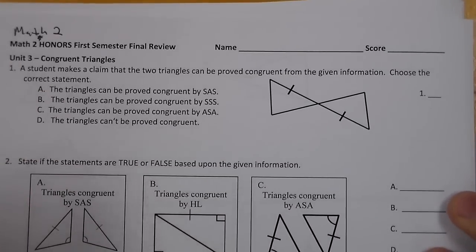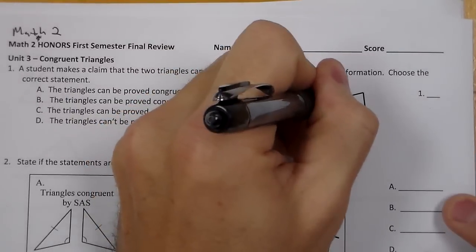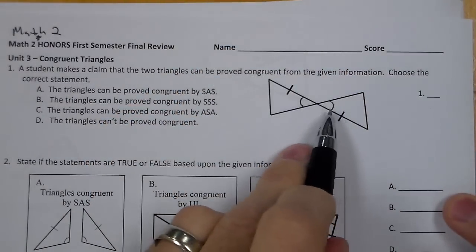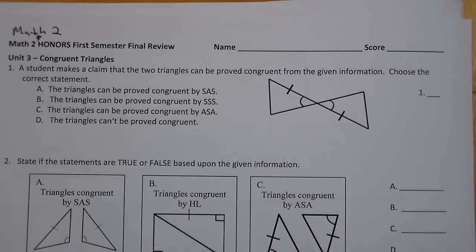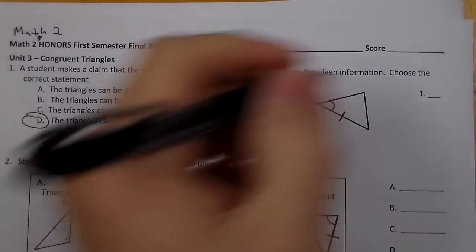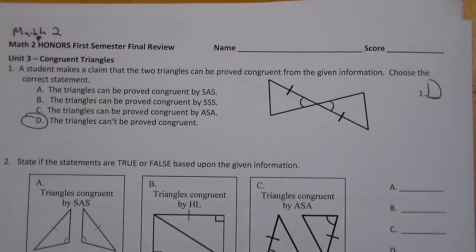First one says a student makes a claim about the two triangles and can be proved congruent. Choose the correct statement. Well, I have some labeled sides. I also have vertical angles here. I don't have anything else given to me. There's no other information. We can't fall into the trap of using it looks like there's other sides or angles that are the same. We're going to go with D. The triangles can't be proved congruent. You need something else, not enough information.